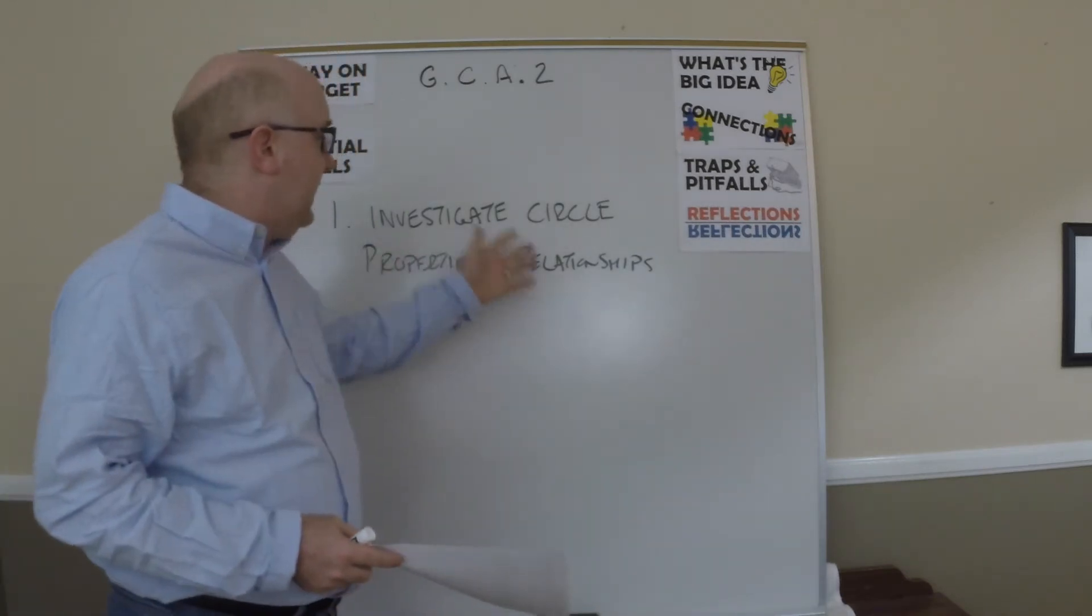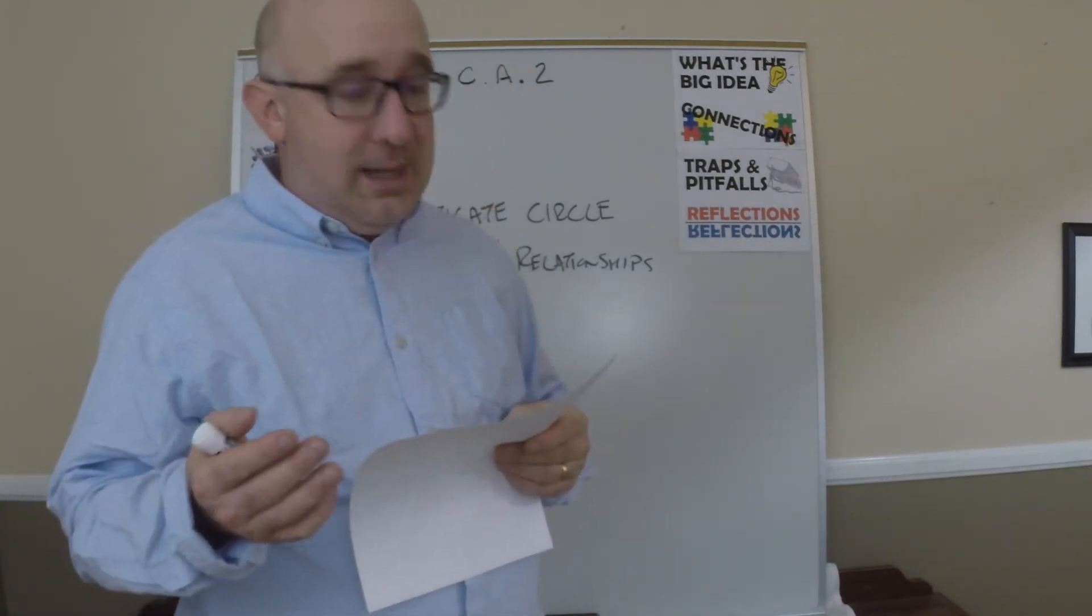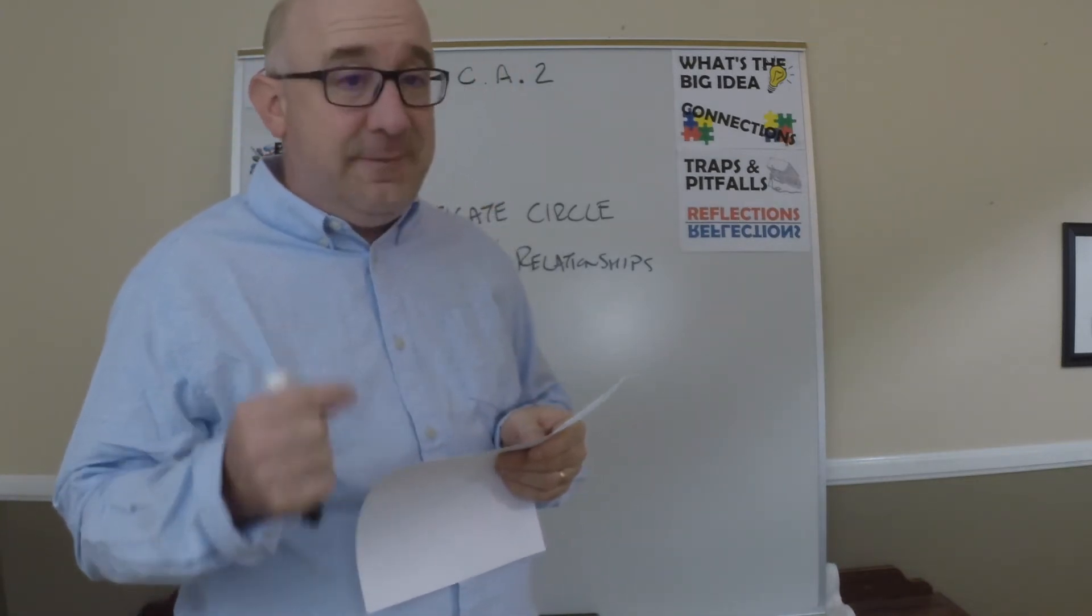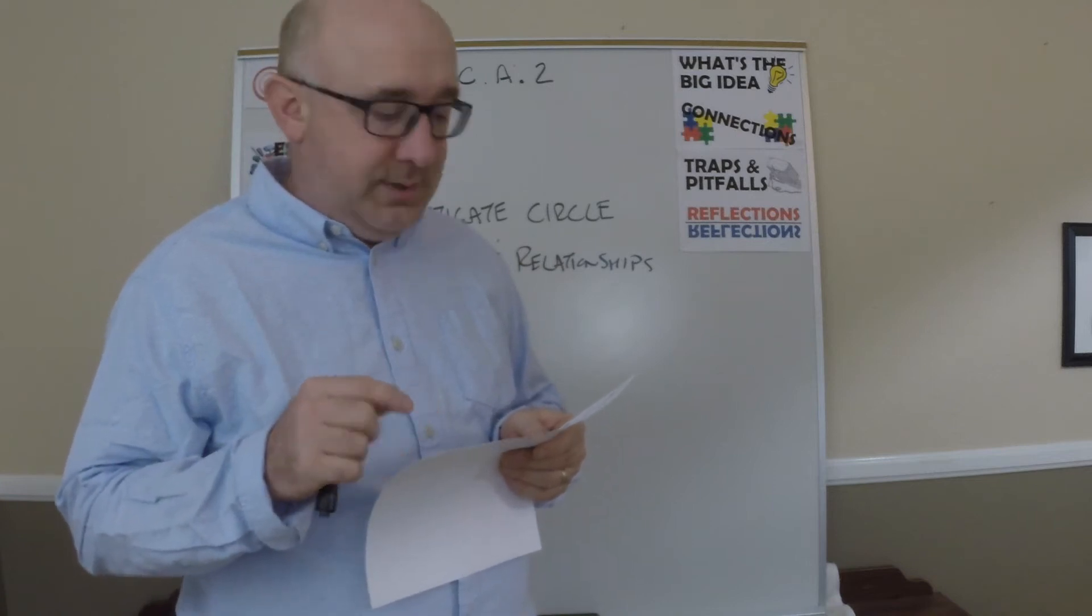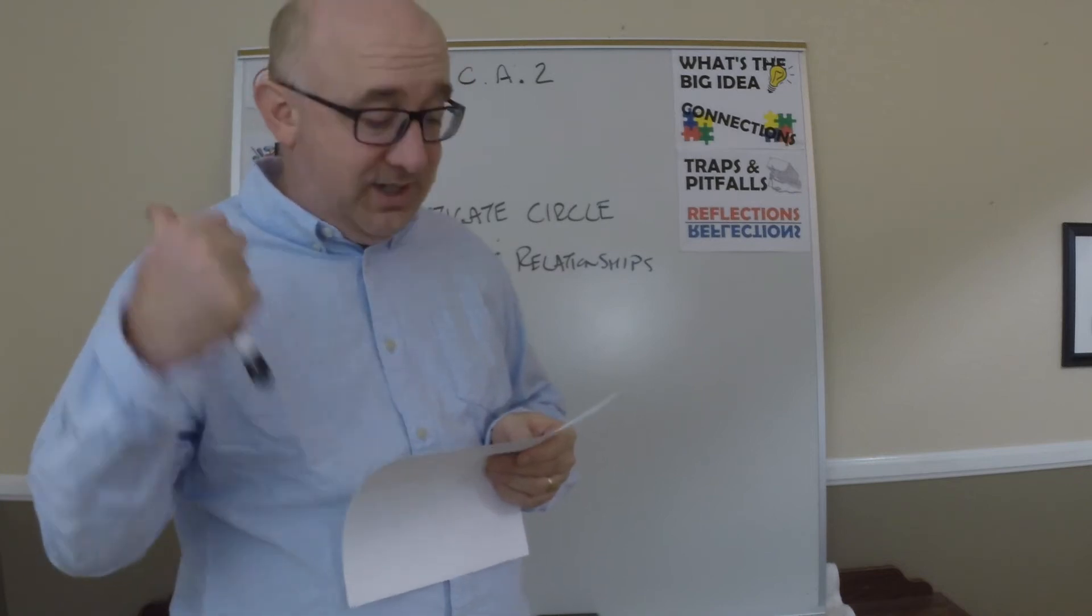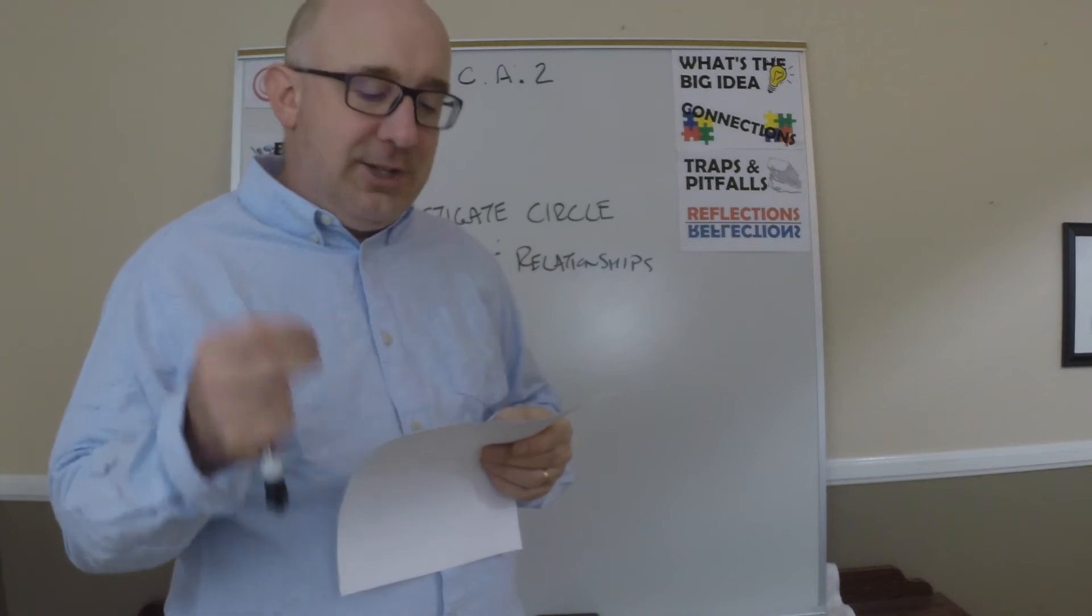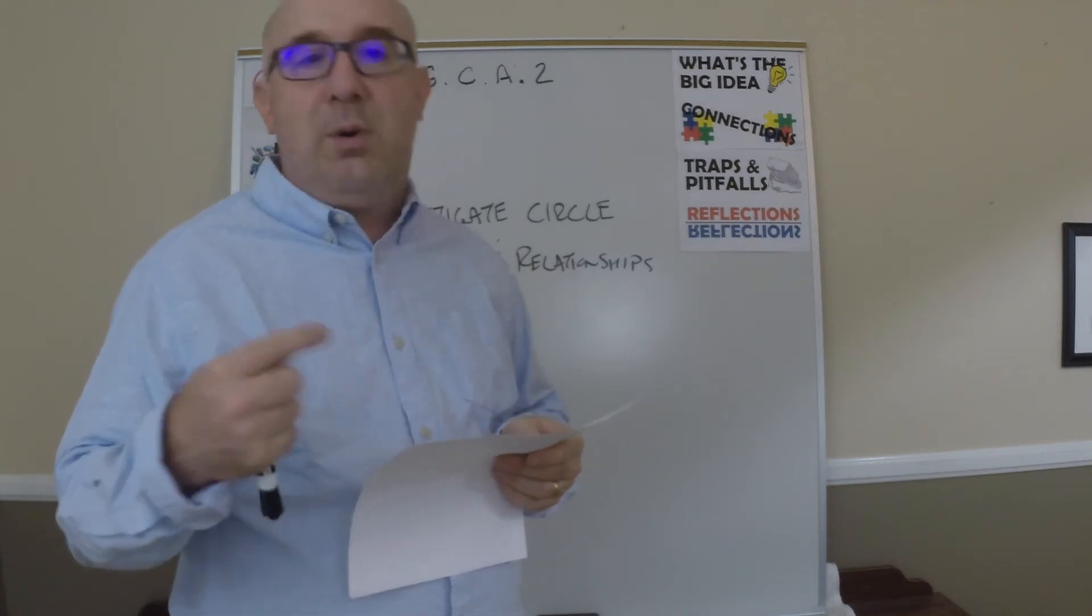This basically is investigating circle properties and relationships. The actual objective says identify and describe relationships among inscribed angles, radii, chords. Include relationships between central, inscribed, circumscribed angles, inscribed angles on diameters, and so on and so on.